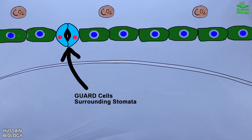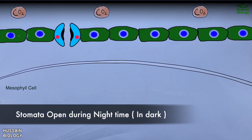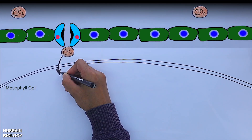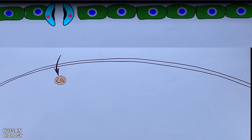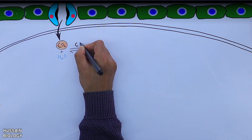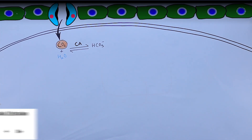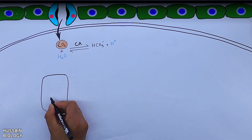Now let's look at the CAM pathway in detail. In the diagram we have the epidermis, which has stomata surrounded by guard cells. During the night time the stomata open in succulent plants, as shown in the animation. When the stomata open, CO2 is trapped and enters the mesophyll cell, where it combines with water in the presence of carbonic anhydrase enzyme and gets converted into bicarbonate (HCO3⁻) and a proton.